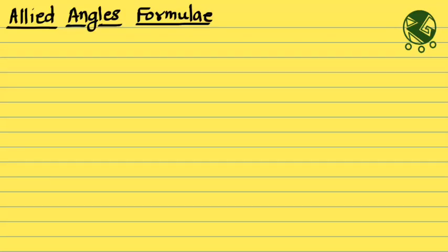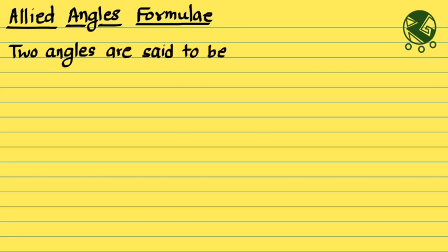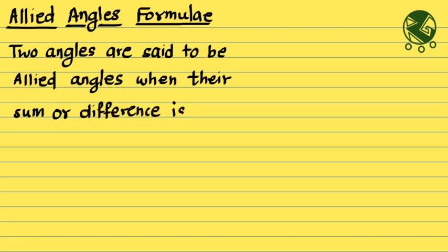After compound angles formulae, let me introduce you to the allied angles formulae. Allied angles formulas are going to be very very useful to you. Two angles are said to be allied angles when their sum or difference is 0 or a multiple of 90 degrees.